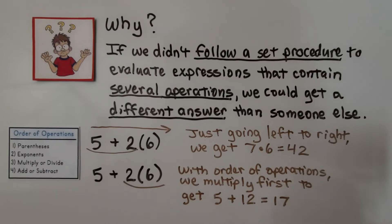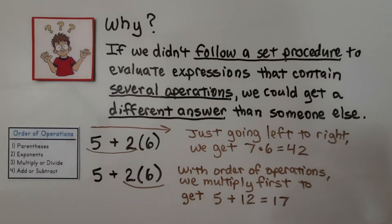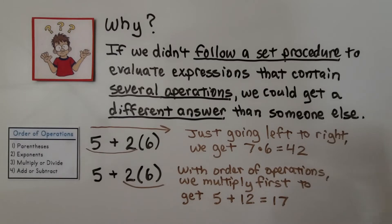So why do we do this? Why do we use the order of operations? Well, if we didn't follow a set procedure to evaluate expressions that contain several operations, we could get a different answer than someone else. If someone just starts from the left and goes straight across, they would have 5 plus 2, which is 7, times 6. That would give them 42. If we follow the order of operations, we'll do the multiplication first and have 2 times 6, which is 12. Then we'll add the 5 and we'll have 17. Completely different answer. So it's good for everyone to follow the same set procedure.